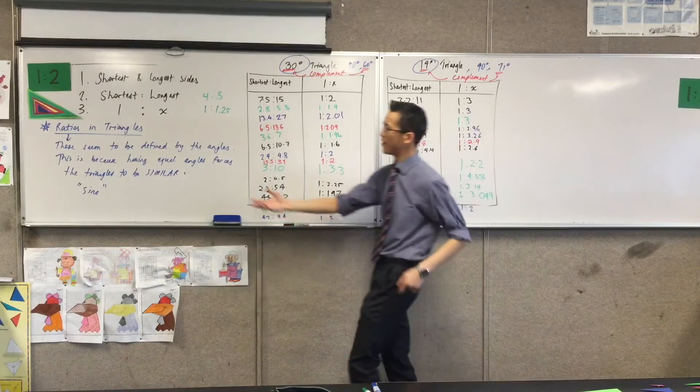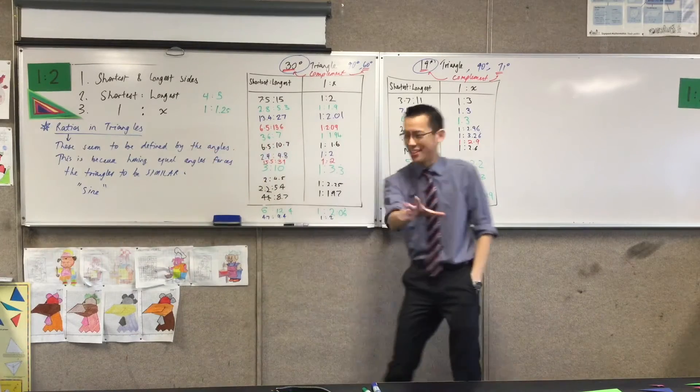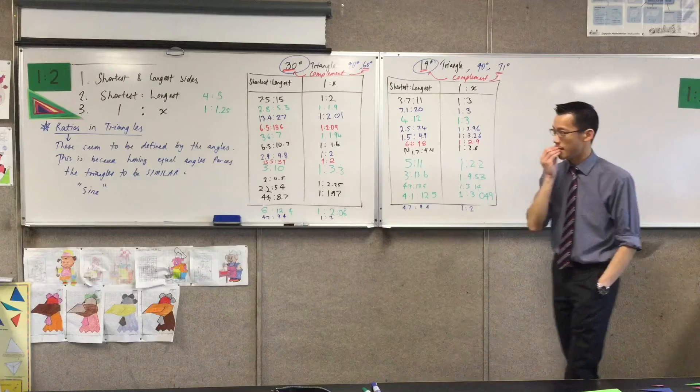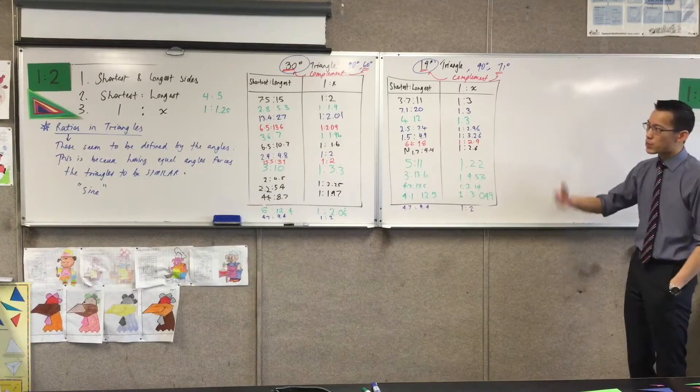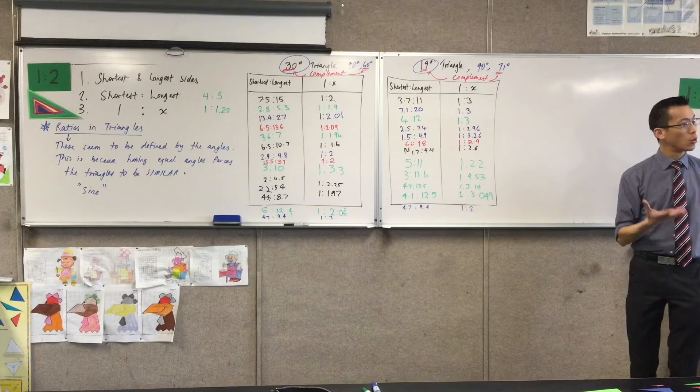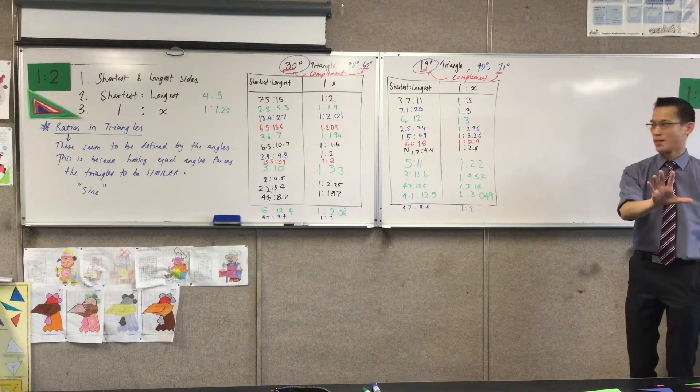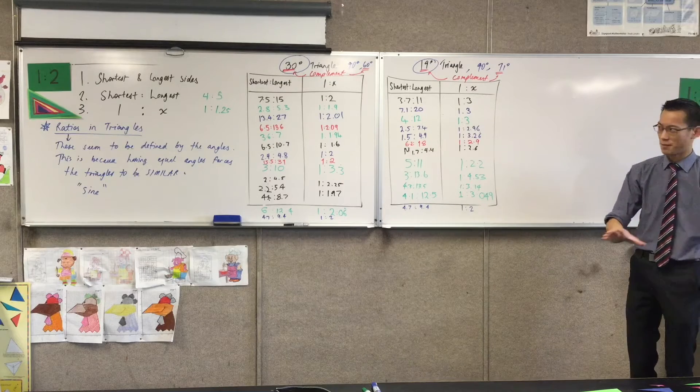And the reason for why they are is because you're unintentionally creating these similar shapes. Mystery number two is why is this ratio called sine? I will explain by the end of the lesson. You'll need to help me again, see how we go.